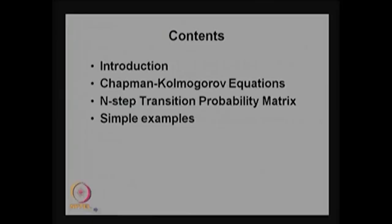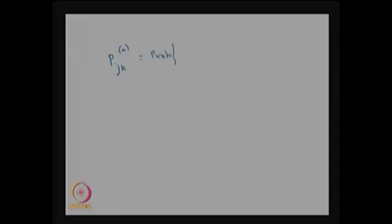This is Discrete Time Markov Chain, Lecture 2. In this lecture we are going to discuss the Chapman-Kolmogorov equations, the n-step transition probability matrix, and a few more examples. In the last class we discussed the transition probability of j to k in n steps as the probability that x takes value k given that x was j, for n greater than or equal to 0 and j belonging to S.